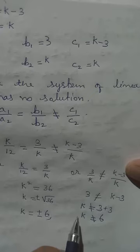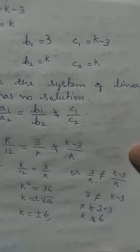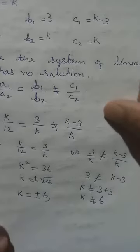Here we see that k should be equal to minus 6 and at the same time it should not equal to 6. We get the value of k.